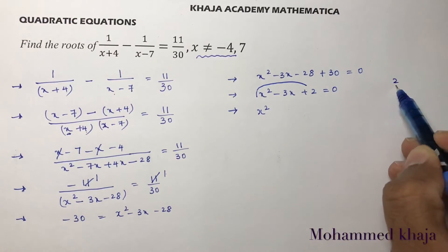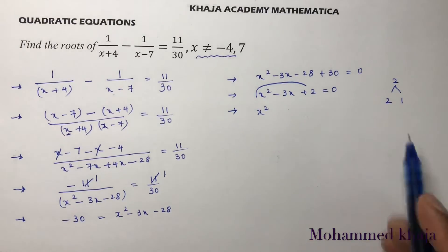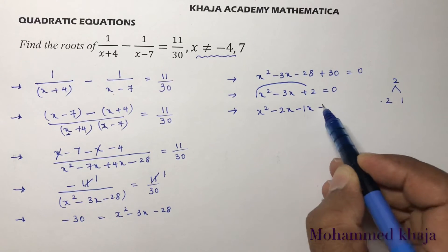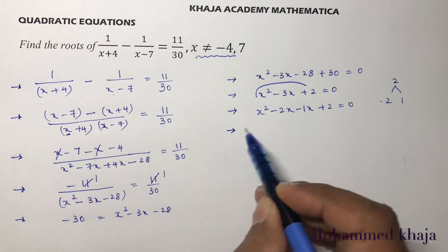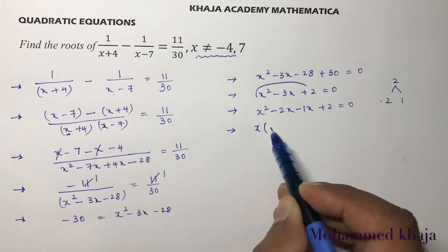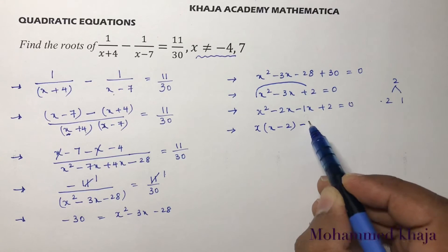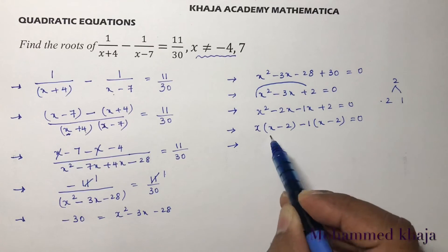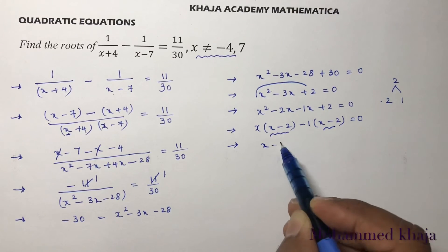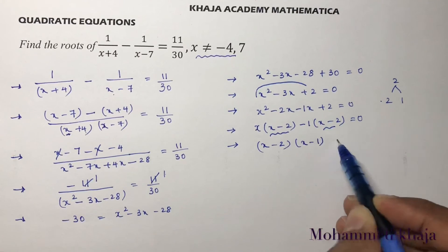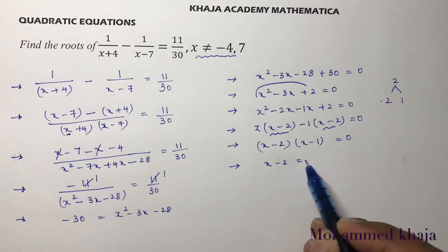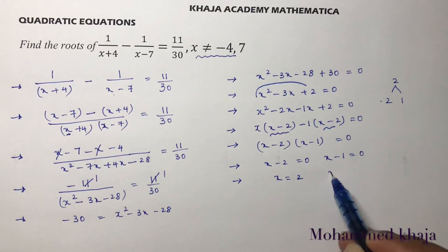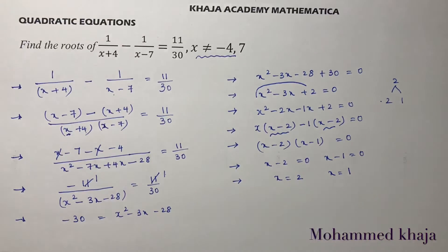Now factorizing x squared minus 3x plus 2: we need factors of 2 that add to minus 3, which are minus 2 and minus 1. So we write x squared minus 2x minus 1x plus 2 equals 0. Taking x common from the first two terms gives x(x minus 2), and minus 1 common from the last two gives minus 1(x minus 2). So (x minus 2)(x minus 1) equals 0, giving x equals 2 and x equals 1 as the roots.